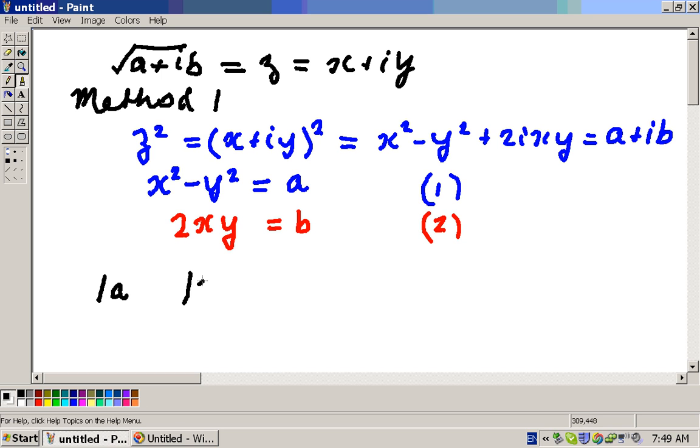So mod Z squared must be equal to X squared plus Y squared, and that must be equal to the modulus of this number, which is the square root of A squared plus B squared. So let's call that equation 3.